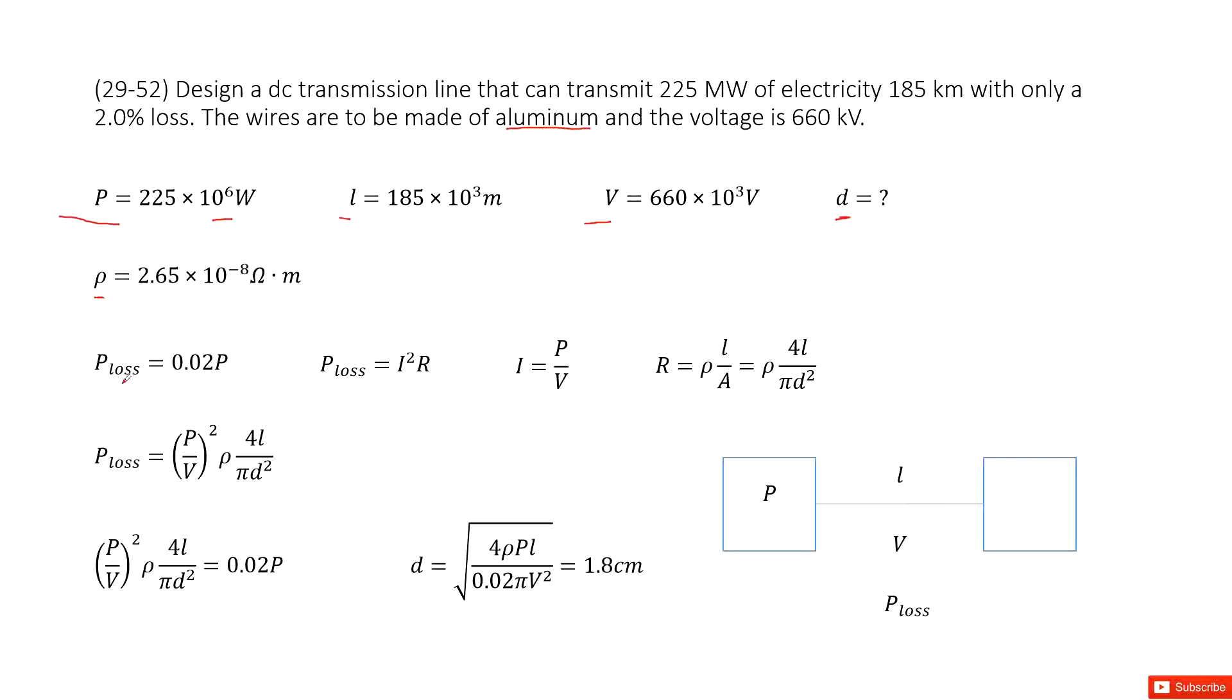We can see the given quantity as the loss power is just 2% of the total power. And the P is given. So we need to look at the loss power.